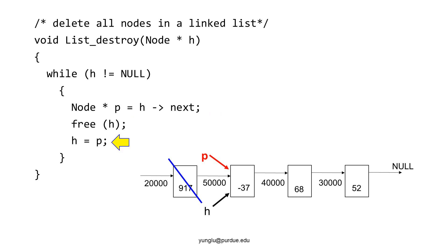The next step moves h to the next node. Earlier, p stored the address of the next node. By assigning p's value to h's value, h now points to the same node of the linked list as p. The program goes back to the top and checks whether h is null or not.